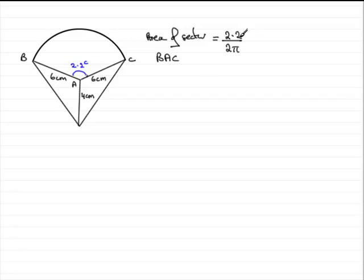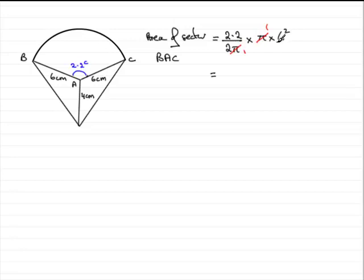So that's the fraction of 2π times the area of a circle, which will be πr². In this particular example, it's π times 6 squared. Now the π's cancel, so you don't need to type those into a calculator, and you get the standard formula: half of the angle times the radius squared when working in radians — ½θr². Work this out on the calculator, and you'll find you get 39.6 centimetres squared.